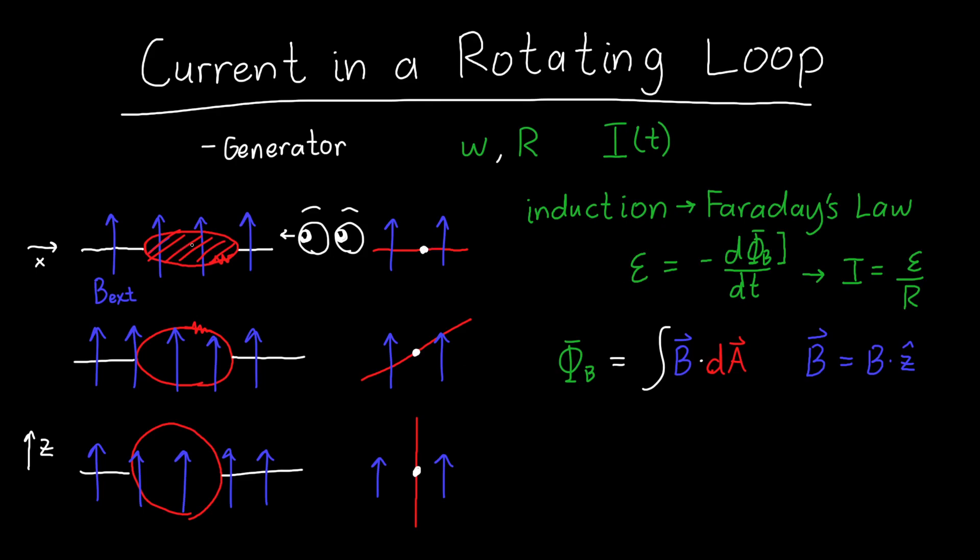And because this is an open surface, we could choose dA to point up or we could choose it to point down. Initially, I'm going to choose it to point up just for simplicity. So initially, dA is pointing straight up, it's in the same direction of the magnetic field. But as the loop turns, dA turns with it.